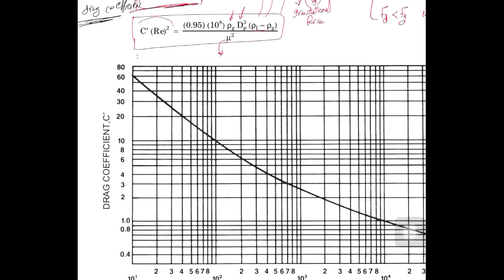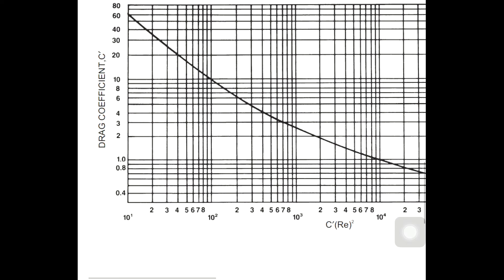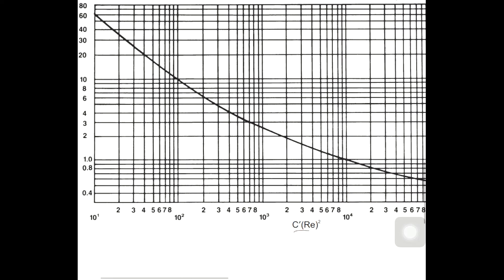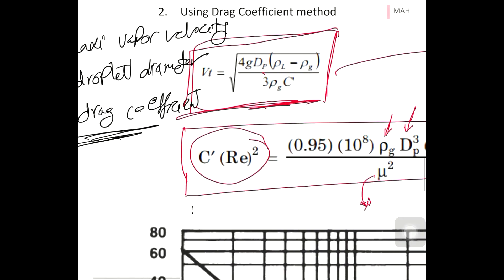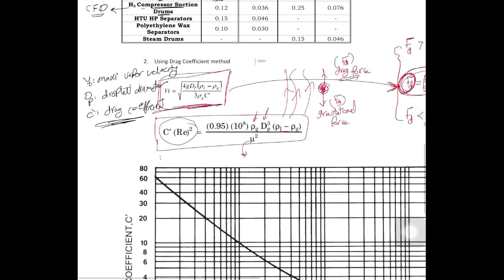We can calculate the x-axis value, then go up to the intersection with the curve and read off the drag coefficient — for example, C' = 1. We then substitute into the equation. The importance of this approach is that it helps you calculate the maximum droplet diameter that will be carried away with the vapor.